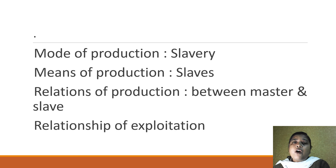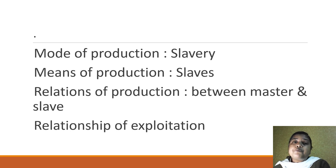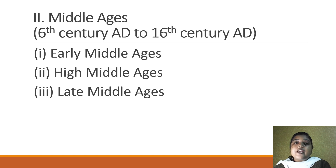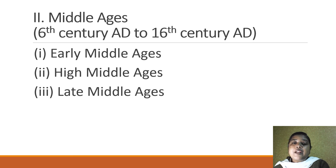As slavery gradually disappeared from society, the medieval age — or the middle age — in Europe began. The middle age was characterized by a different mode of production, which was feudalism. The middle ages in Europe begin from the 6th century AD and continue up to roughly the 16th century AD. They are again divided into three phases: early middle ages, high middle ages, and the late middle ages.